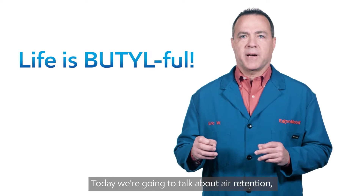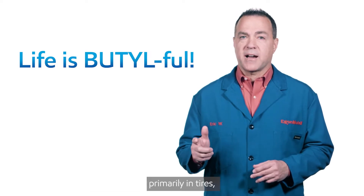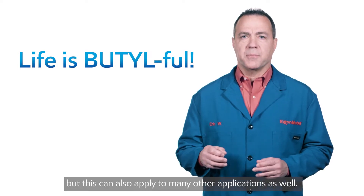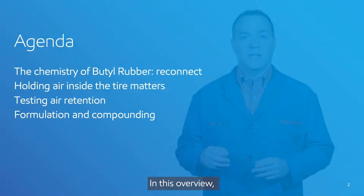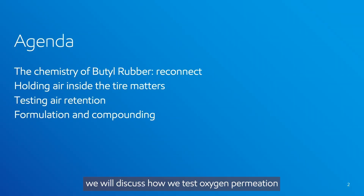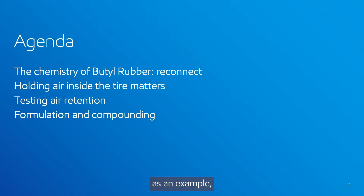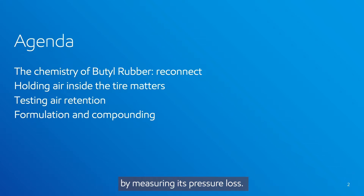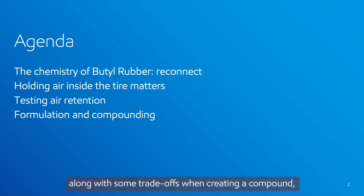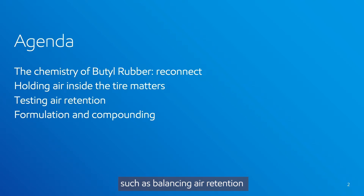Today we're going to talk about air retention, primarily in tires, but this can also apply to many other applications as well. In this overview, we will discuss how we test oxygen permeation through rubber compounds and, as an example, how to evaluate tire air retention performance by measuring its pressure loss. We will also review a model interliner formulation, along with some trade-offs when creating a compound, such as balancing air retention with other desirable properties.